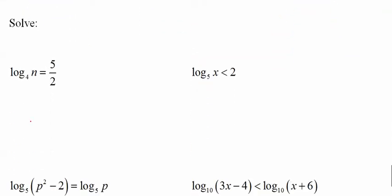Solve them. 4 to the 5 halves equals n. Well, 4 to the 1 half is 2. So that's the same as saying 2 to the 5th. n equals 32. I apologize for doing that so quickly. You will have to practice a lot.